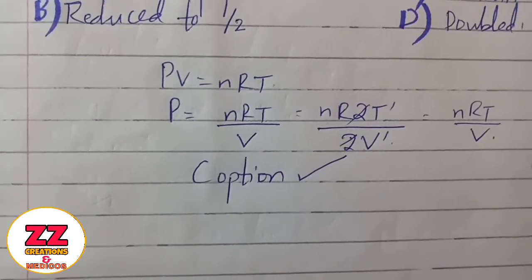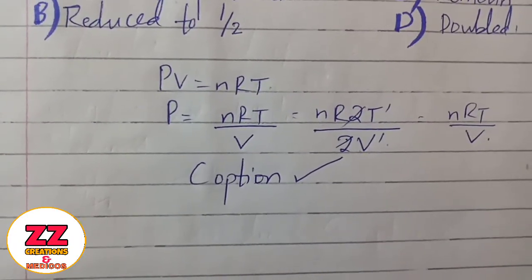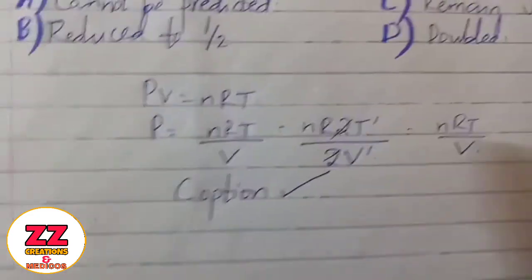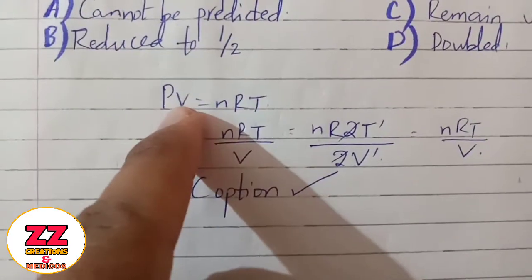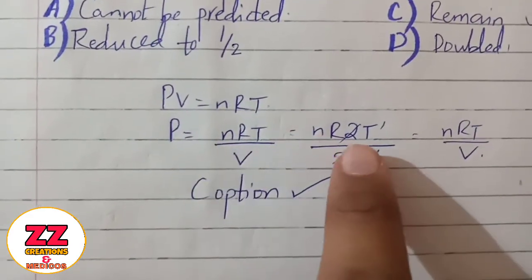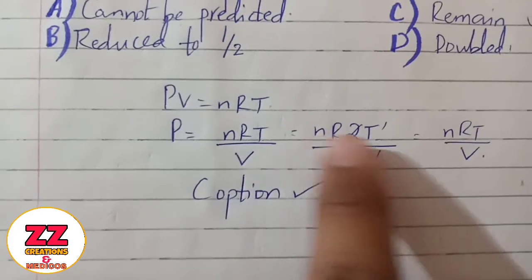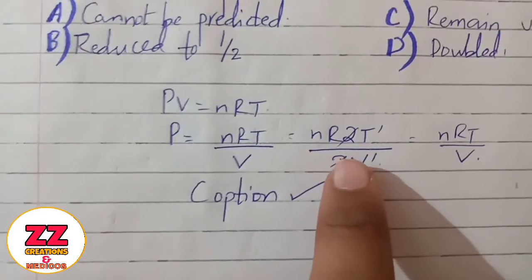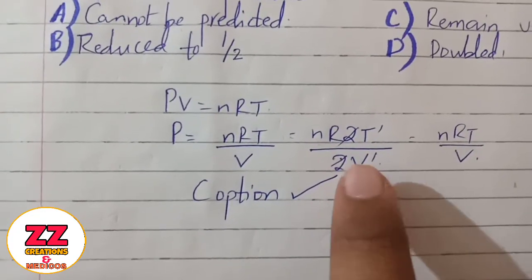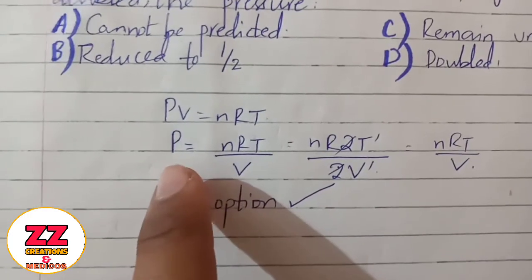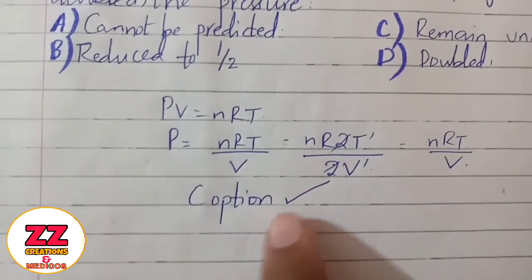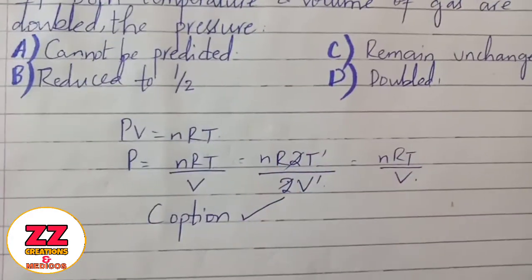We know that according to the general gas equation, PV is equal to nRT. If we double both the temperature and volume of a gas, these changes cancel out, and the pressure will have no net effect — it will remain unchanged.